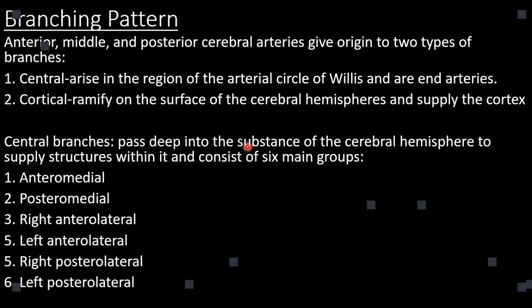The central branches pass deep into the substance of the cerebral hemisphere and supply structures within it. They consist of six main groups: the anteromedial group, the posteromedial group, the anterolateral group (with right and left subgroups), and the posterolateral group (also with right and left subgroups).